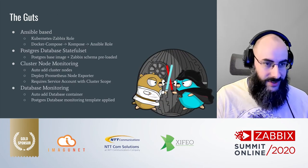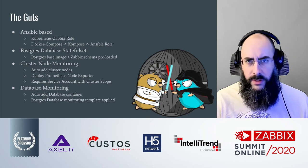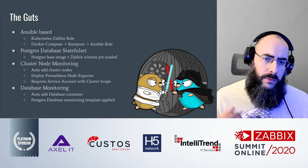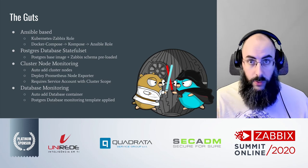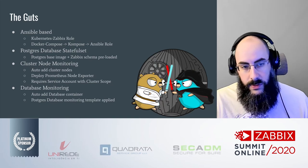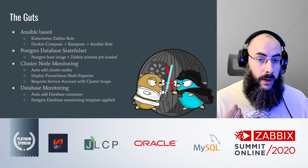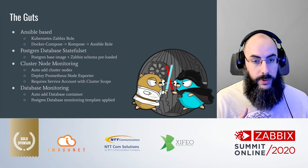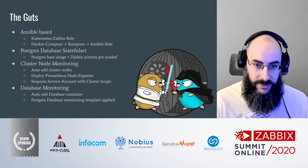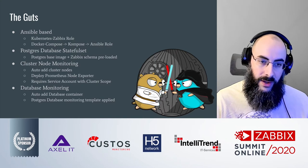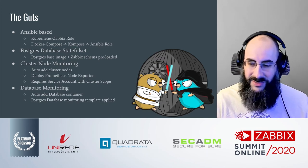Let's roll into the guts of what this operator is, how it was built, and what's maybe different than most situations. This operator is actually based on Ansible, and what it does is deploy a Zabbix role into a Kubernetes cluster. That role is built by taking the Docker Compose files for Zabbix from the official repositories, then running a tool called Kompose over those Docker Compose files — which, as you might notice from the name, converts your Docker Compose files into Kubernetes resource definitions.